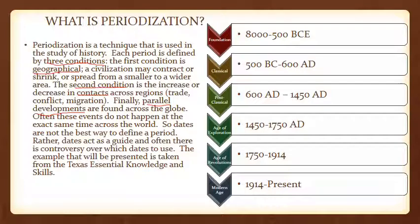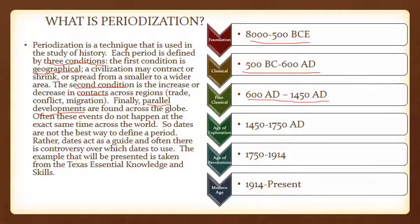An example taken from the Texas Essential Knowledge and Skills divides time periods into: the foundation period, 800 to 500 BCE; the classical period, 500 BCE to 600 AD; the post-classical period, 600 AD to 1450 AD; the age of exploration, 1450 to 1750 AD; the age of revolution, 1750 to 1914 AD; and then starting with World War I, 1914 to the present. But many are arguing there's a new post-9/11 post-modern era that we'll talk about later.